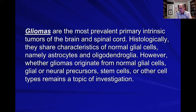Let's get a definition out there before diving in. Gliomas are the most prevalent primary intrinsic tumors of the brain and spinal cord. Histologically, they share characteristics of normal glial cells — cells like astrocytes and oligodendroglia. Whether gliomas originate from normal glial cells, glial or neural precursors, stem cells, or other cell types still remains a topic of investigation.